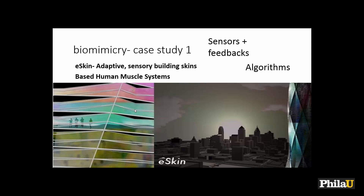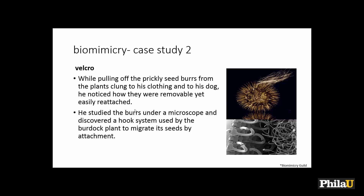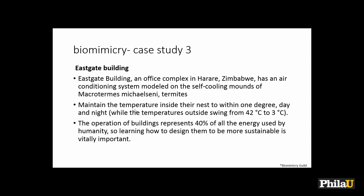Here's an example of an adaptive skin. We're seeing buildings that have adaptive skins — they know where the sun is, where the heat is, where it's cool, and the building changes its glass to adapt to the environment. Then there's Velcro: the guy was hunting with his Irish Pointer, traveled through some burdock thistles, and noticed how seed burrs clung to his clothing and the dog — removable yet easily reattached. Was he thinking 'I'm going to be biomimetic'? No. It happened to be biomimetic after the fact. I think we over-indulge this desire to make everything about biomimicry when it's not really that.